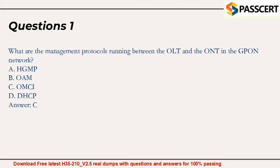Question 1. What are the management protocols running between the OLT and the ONT in the GPON network? A. HGMP. B. OAM. C. OMCI. D. DHCP. Answer: C.